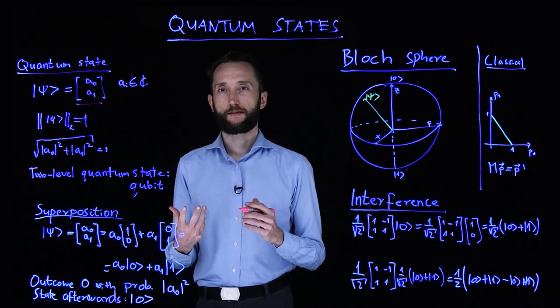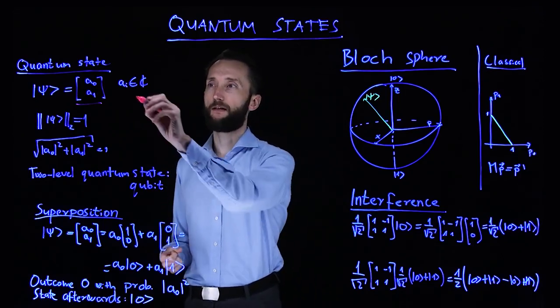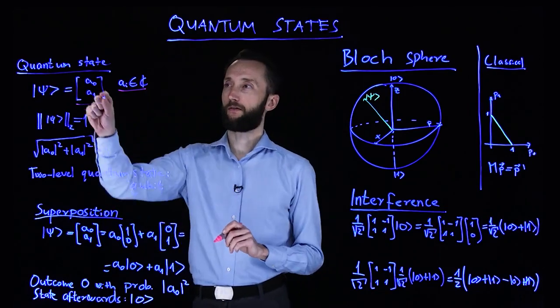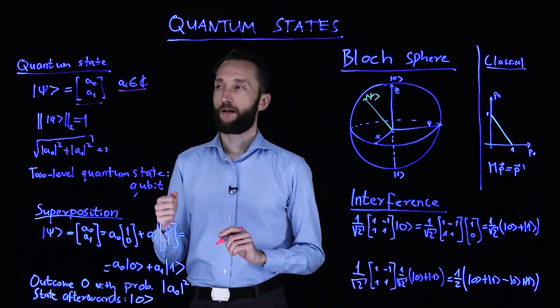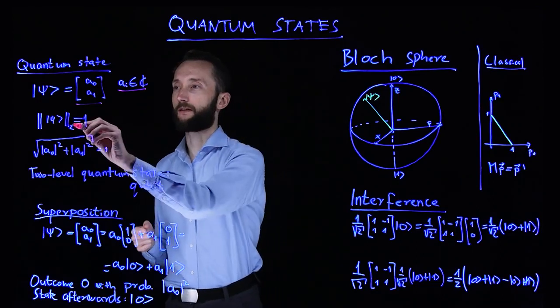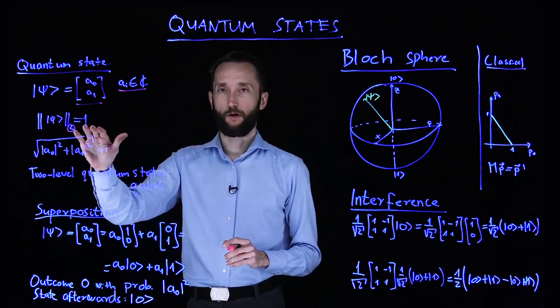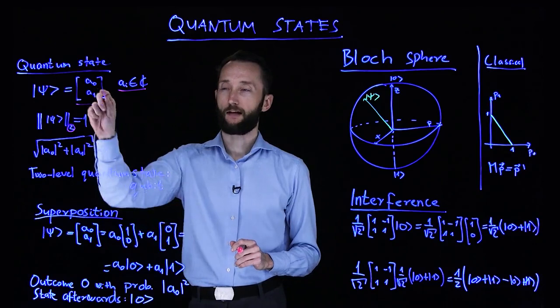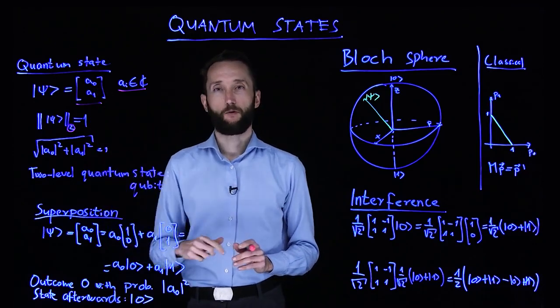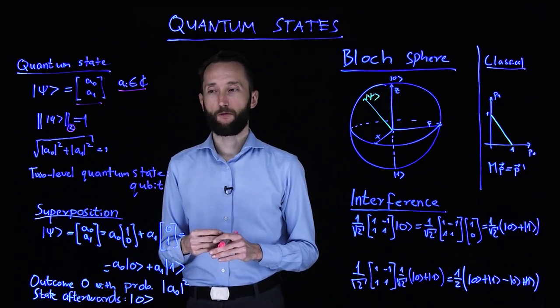But the big difference is that you are not restricted to real numbers and non-negative real numbers because the entries in this vector are complex values. And the normalization of this vector, instead of the 1 norm, happens in the 2 norm. So you're still normalizing to 1, but now the square sum of the absolute values of the entries adds up to 1 as opposed to just the absolute values adding up to 1.